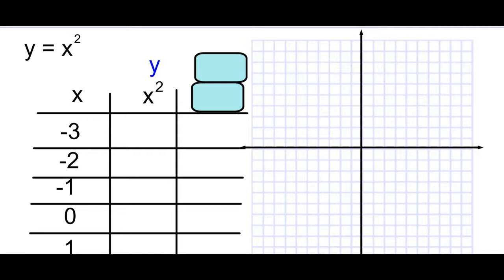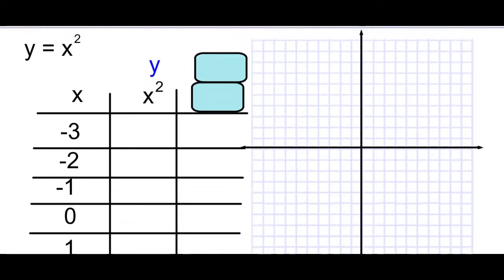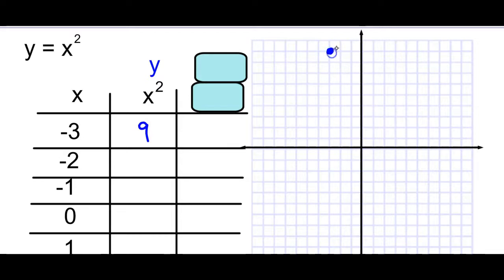The first thing we're going to start with today is graphing the most basic quadratic function: y equals x squared. Here are some numbers — we're going from negative 3 to positive 3. When x is negative 3, you get 9 for y, because negative 3 times negative 3 is positive 9. When x is negative 2, you get positive 4. When x is negative 1, you get positive 1. When x is 0, you get 0.